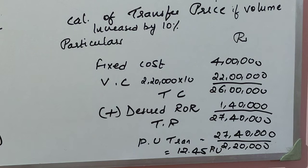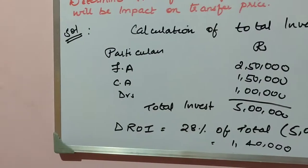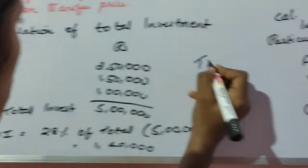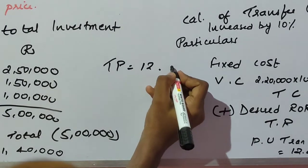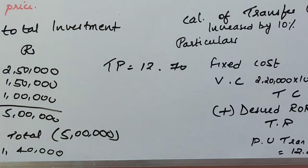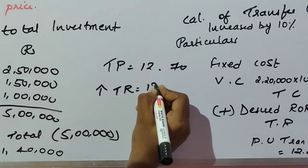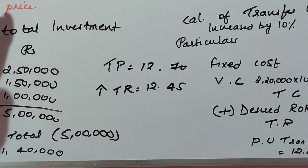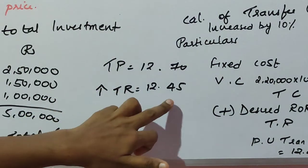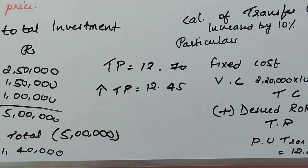Observing the change: when volume is 2,00,000 units, the transfer price is ₹12.70 per unit. When units are increased to 2,20,000, the transfer price falls to ₹12.45 per unit. The conclusion is that as volume increases, the transfer price gets reduced. This is the impact of increased volume under the cost plus method.